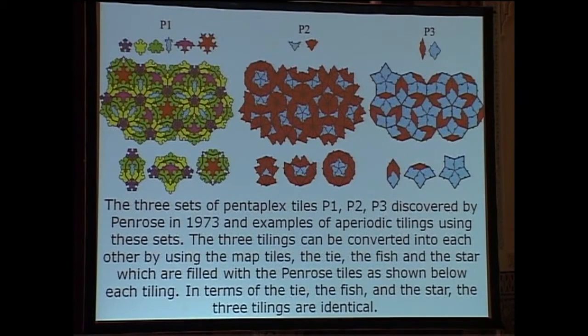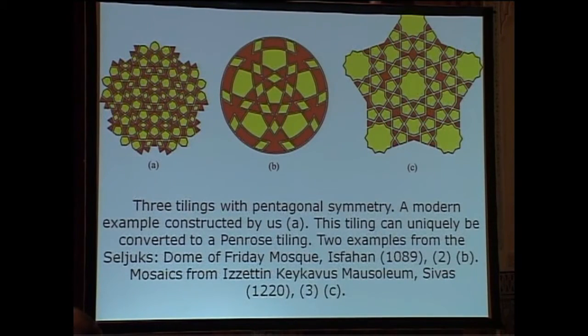So, here are the three sets of Penrose tiles. P1, P2 and P3 are equivalent. You can obtain one from the other. But P3, in terms of P3 it is easy to understand the basic things that we call the star, the fish and the tie. And in all of these you can have two basic figures. One is the thin rhombus and the other one is the thick rhombus.